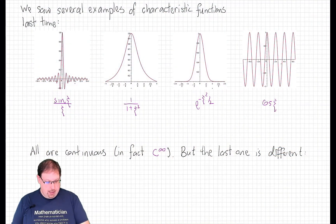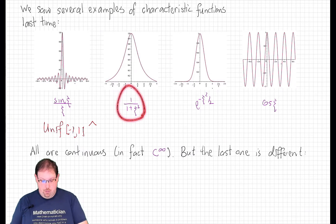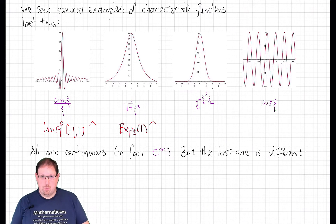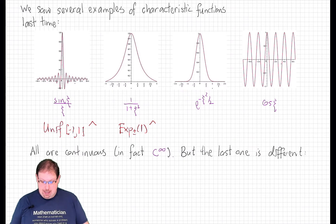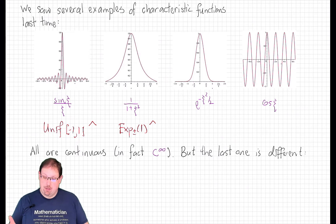Last time, we saw a number of examples of characteristic functions of probability measures on the real line. The sinc function, sine xi over xi, was the Fourier transform of the uniform probability measure on the symmetric unit interval. The Cauchy function, 1 over 1 plus xi squared, is the Fourier transform of the bilateral exponential distribution of rate 1. The Gaussian density, e to the minus xi squared over 2, is the Fourier transform of itself up to scale, the standard normal distribution.